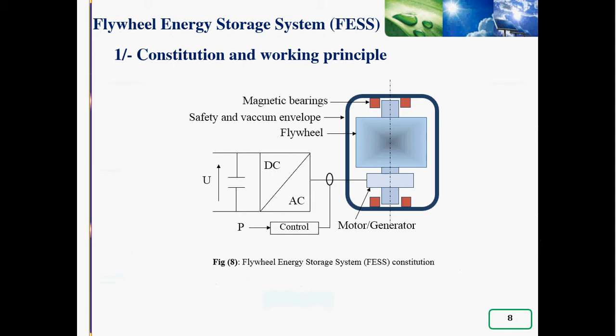During the discharge of FESS, the mechanical energy is converted into electrical energy through the electrical generator. The operating speed is imposed by the power electronic converter, which imposes the direction of transfer of energy through the electrical machine.